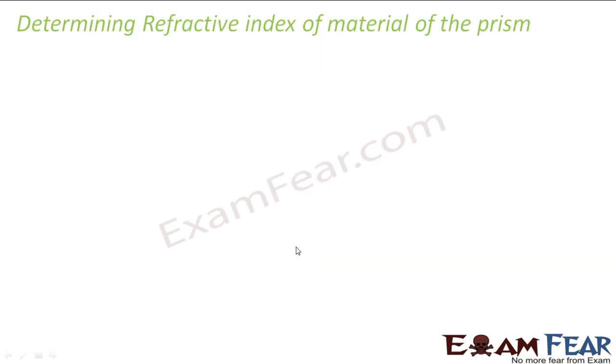So how do we determine the refractive index of the material of the prism? As we know that prisms are made up of different materials depending upon its applications. Sometimes it is made up of glass, sometimes plastic, sometimes fluoride and so on. So here is an approach to determine the refractive index of the material of the prism.